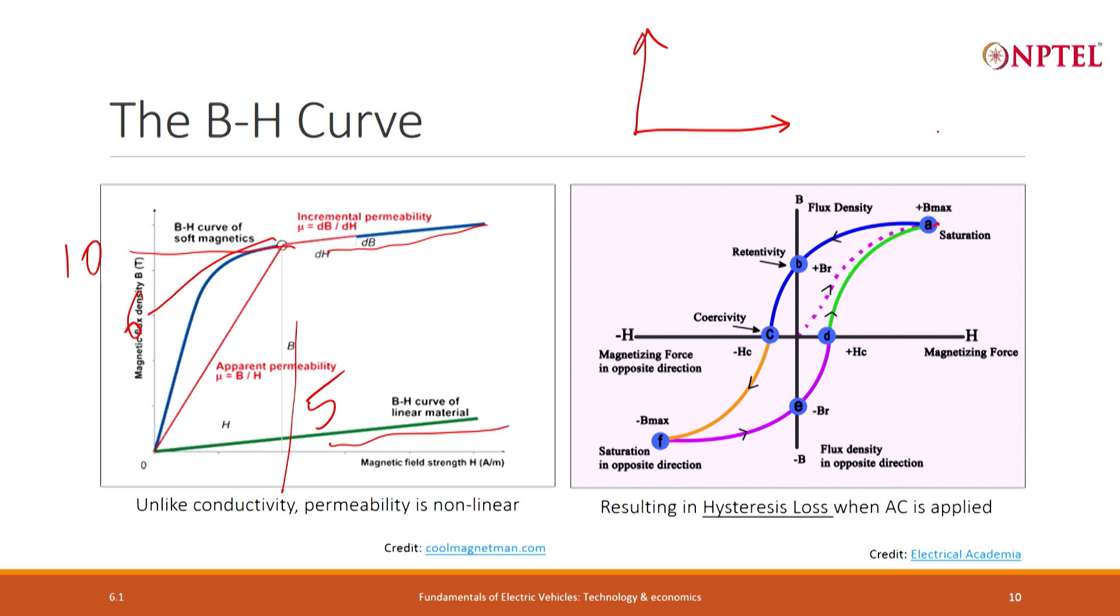In general, this is the field, whatever is forcing a flow I am calling it as the field, and this is the flow. The product of the two is the power. For example, the field is the voltage and the flow is the current. Product of voltage and current is the power, and the area under the flow versus field is the integral of the power, which is the energy.